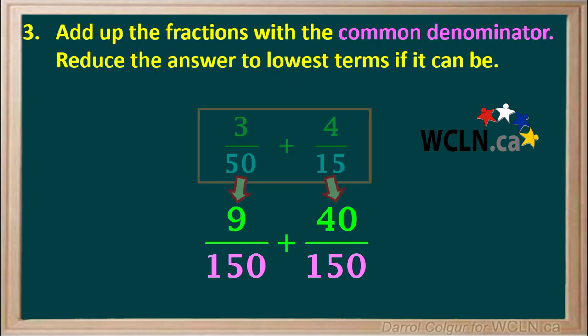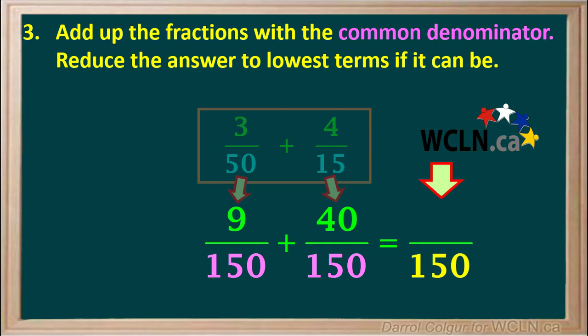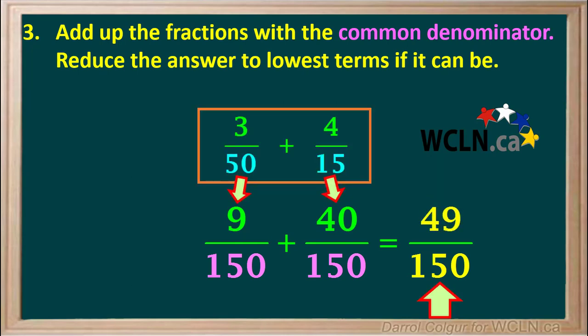In the third step, we add up the fractions with the common denominator. The denominator of the sum will be 150, and the numerator will be 9 plus 40, which is 49. 49 over 150 cannot be reduced to simpler terms. So the final answer to our question is 49 over 150.